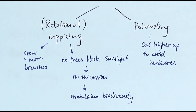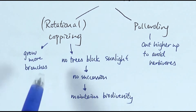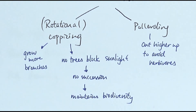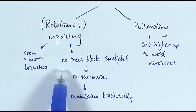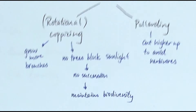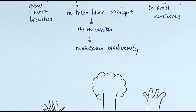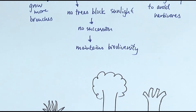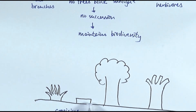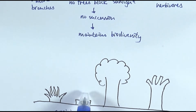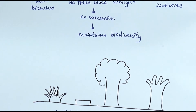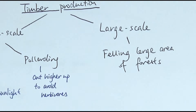Coppicing is a popular topic in exam questions on sustainability. Because the trees are cut near the base, no regrown trees will block the sunlight. Near the base of the trees, many other organisms survive in the soil, and with no trees blocking sunlight there's no competition and no succession occurring. This means you are maintaining biodiversity in that particular area — another important benefit of coppicing.